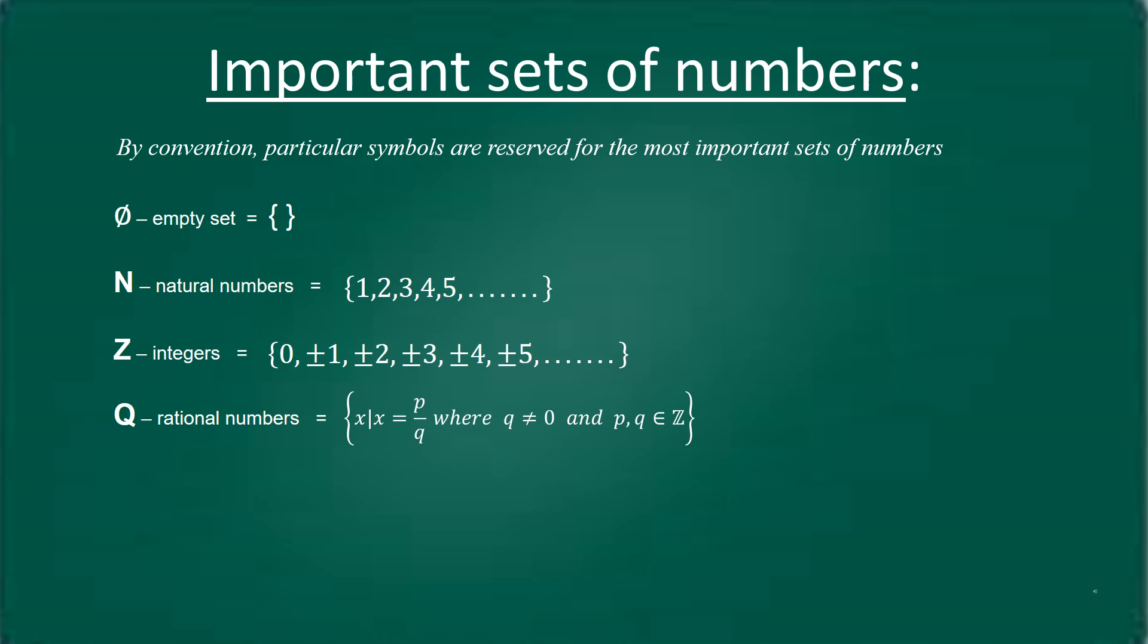Set of real numbers is denoted by R. The set of real numbers is the union of rational and irrational numbers. The set of complex numbers is denoted by capital C.